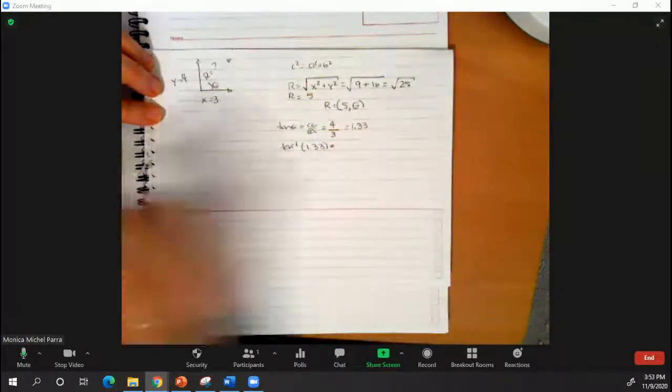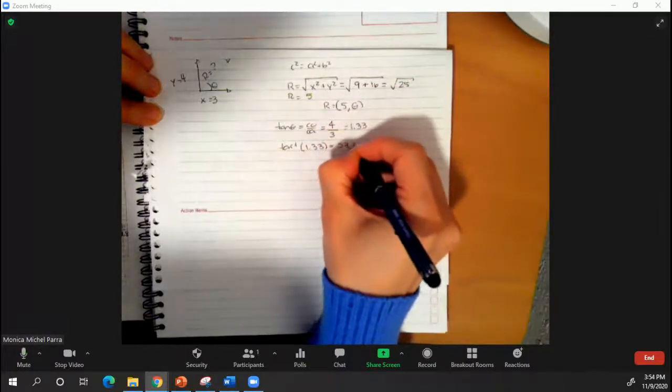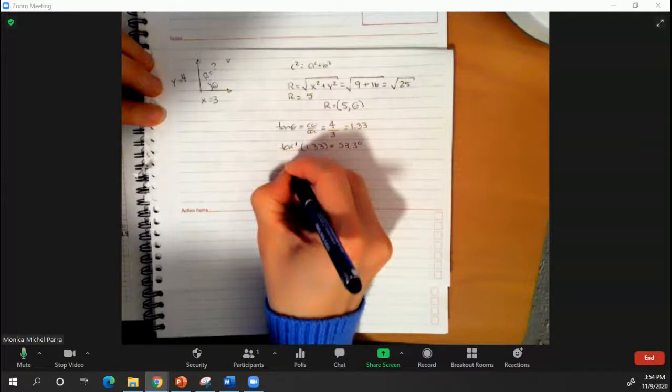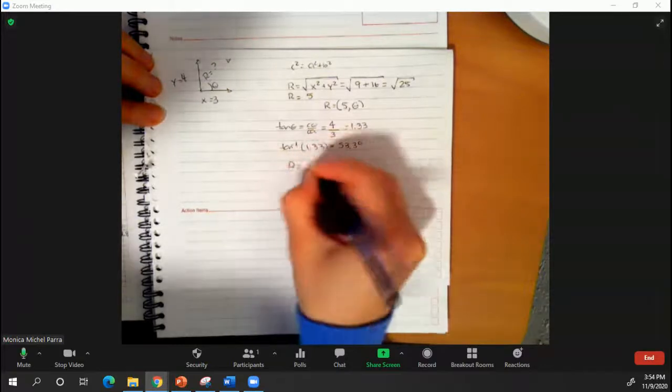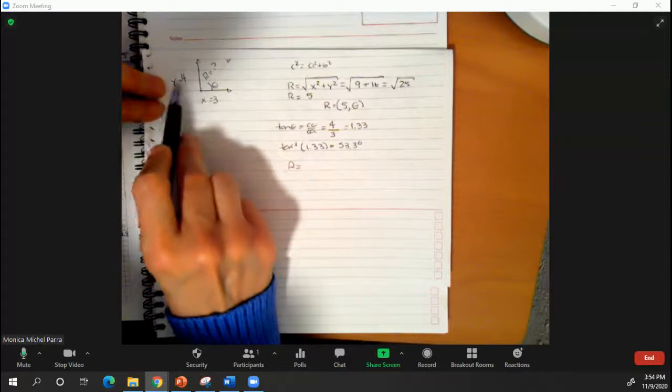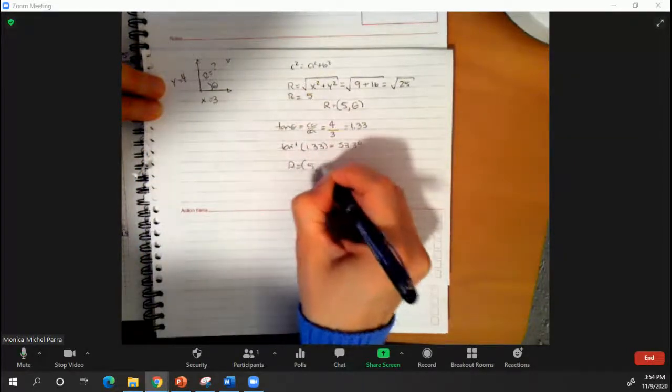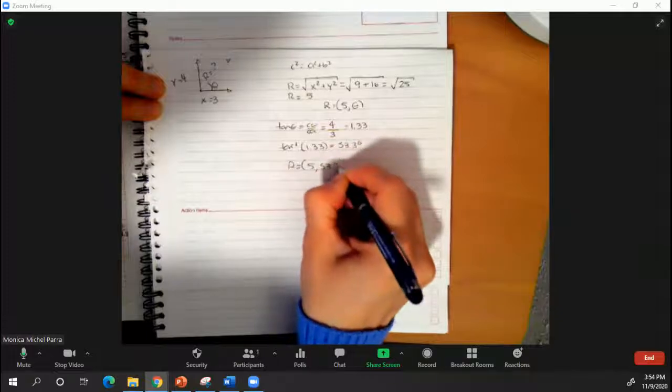And this is what's going to give me an angle of 53.13 degrees. So now I have my answer. The resultant value of having x 3 and y of 4 is going to be equal to 5, 53.3 degrees.